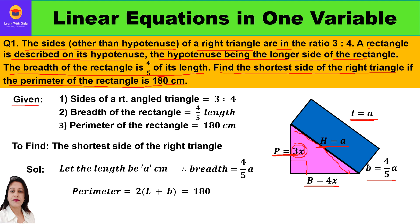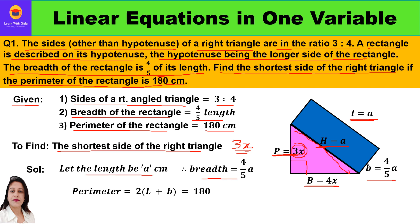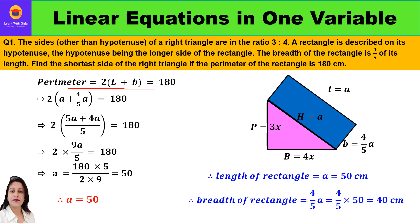Now let us start with the solution. Given: sides of a right-angled triangle are in ratio 3:4, breadth of the rectangle is 4/5 of the length, and the perimeter of the rectangle is 180 centimeters. We have to find the shortest side, that is 3x. Let the length of the rectangle be 'a', so breadth will be 4/5 of 'a'. Perimeter of rectangle is 2(length + breadth) = 180, so we write 2(a + 4a/5) = 180.